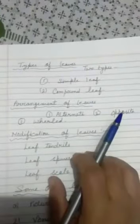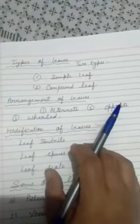In this type of arrangement, two leaves grow from each node and are opposite to each other. Plants such as tulsi and jasmine have their leaves arranged in this manner.